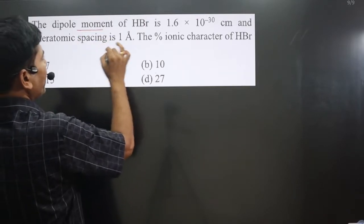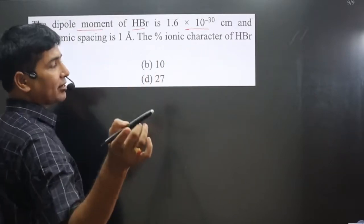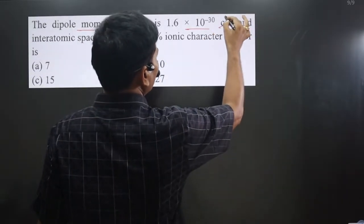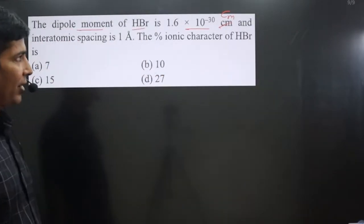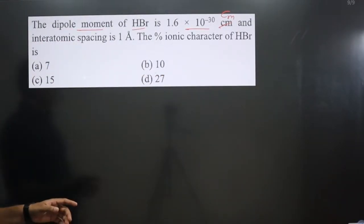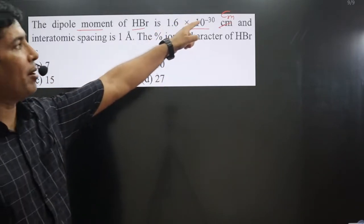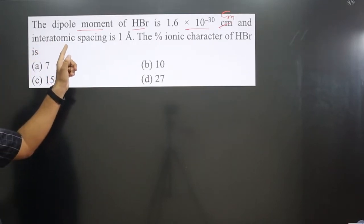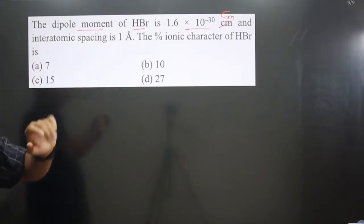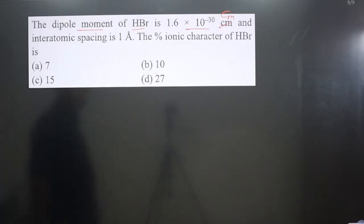The question states the dipole moment of HBR is 1.6 multiplied by 10 to the power minus 30 coulomb meters, because dipole moment equals charge multiplied by distance — charge in coulombs and distance in meters. The interatomic spacing is one angstrom. The percentage ionic character of HBR is to be calculated.